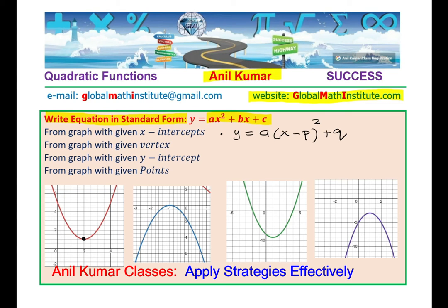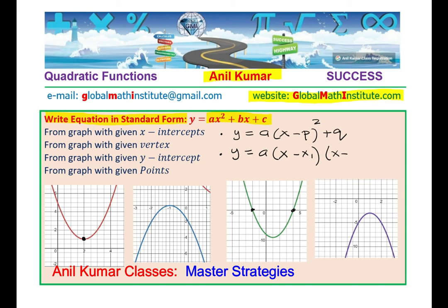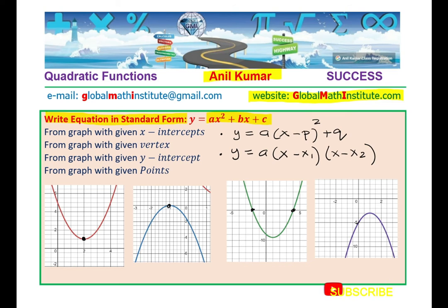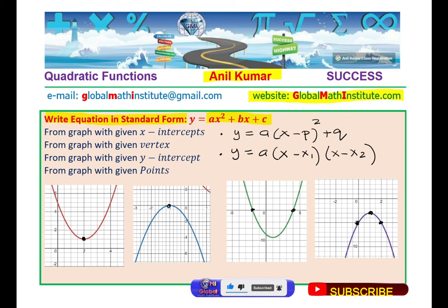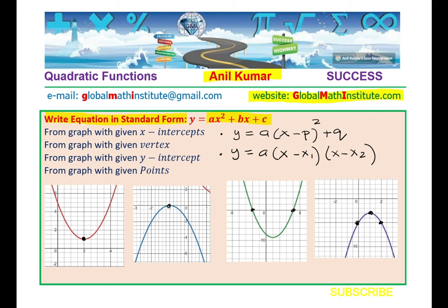If you can identify the x-intercepts, the best equation to begin with will be a times (x minus x1) times (x minus x2). There could also be situations where the vertex is right on the axis itself — in that case, both roots are at one point and the form a(x minus p) squared works very well. In some situations you may identify three different points. So depending on the situation, you choose the starting point.